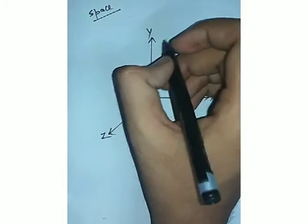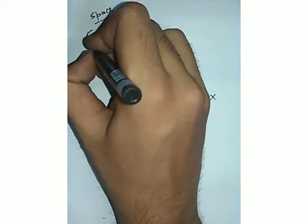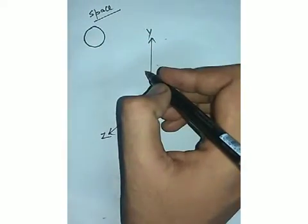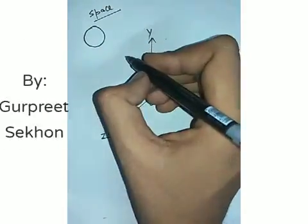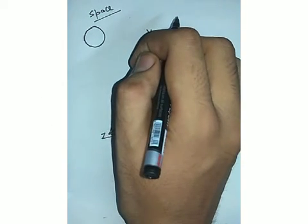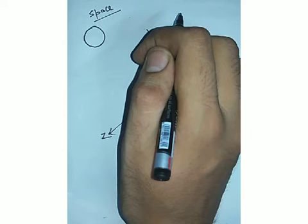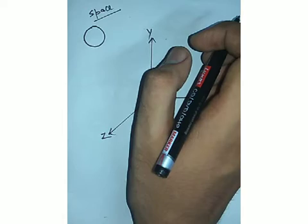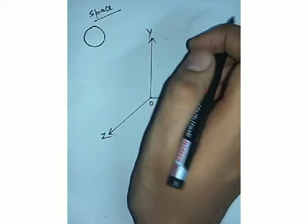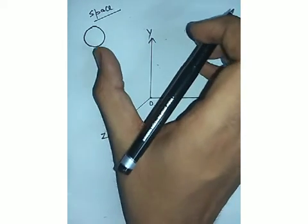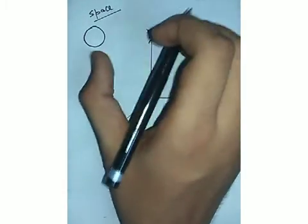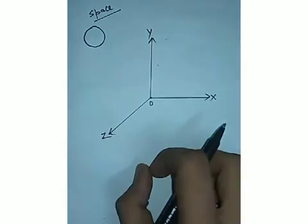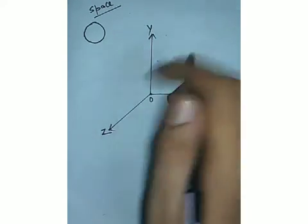Another example of a three-dimensional object from daily life is a ball. Sometimes we talk about a circle — a circle is a two-dimensional figure, like a bangle or bracelet. On the other hand, a sphere is a three-dimensional figure, like a basketball or a plastic ball. So a ball is a sphere, while circles are examples of two-dimensional figures.